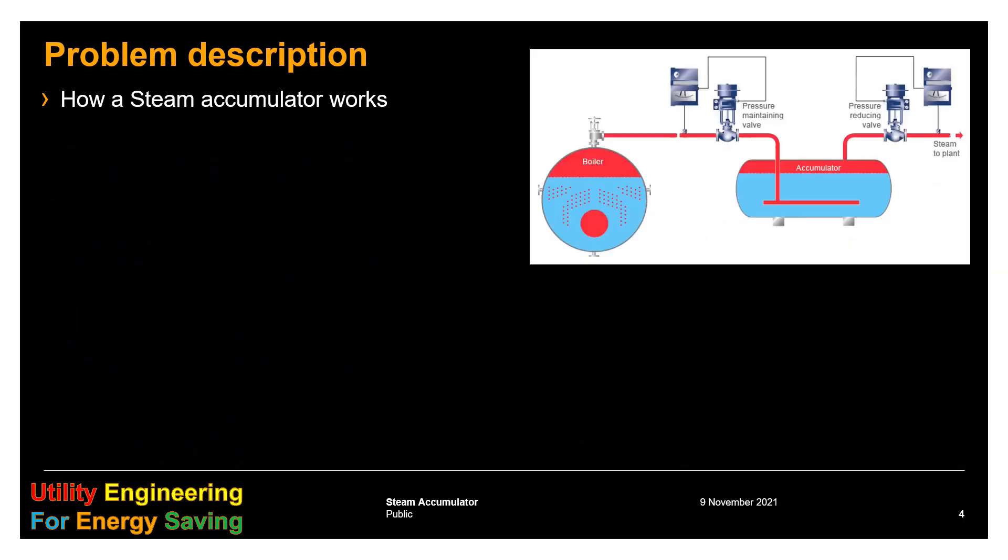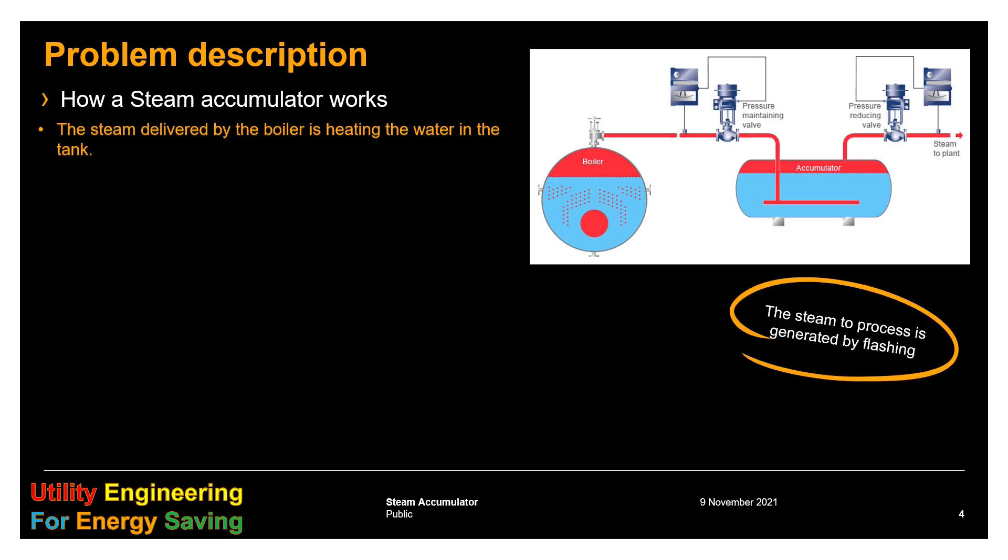That is the reason why a steam accumulator doesn't work as an air buffer. The steam delivered by the boiler is heating the water in the tank, and the water flashes into steam due to delta P between boiler and process. Important that loading and unloading must happen at different times.